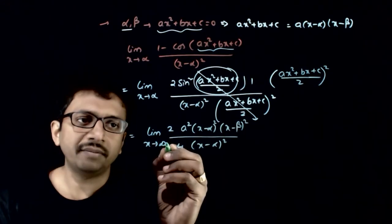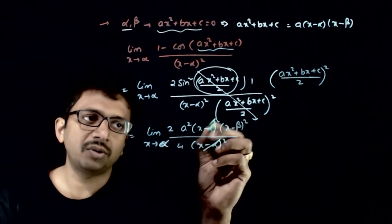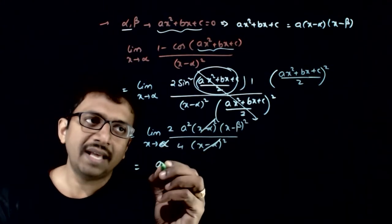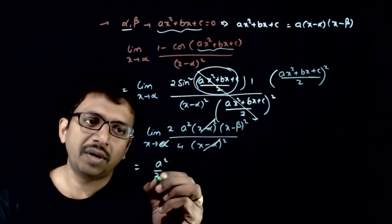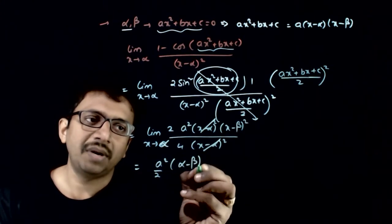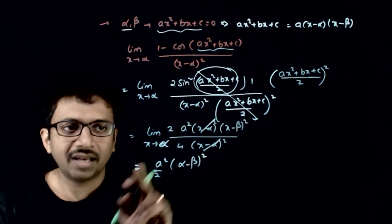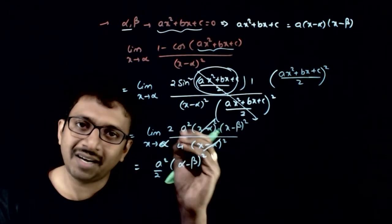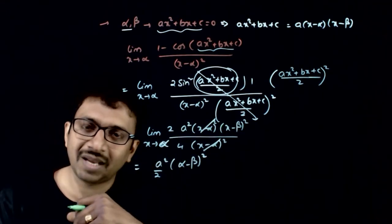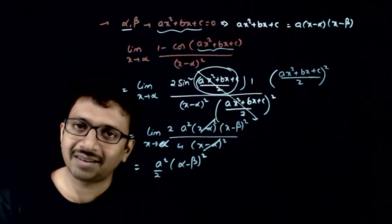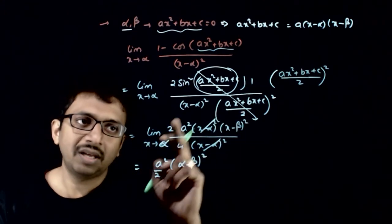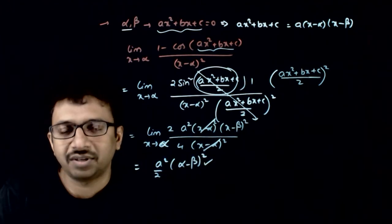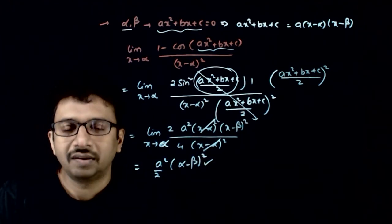As x tends to alpha, the (x − alpha)² terms get cancelled. The indeterminacy is resolved, so you just do direct substitution, giving a² times (alpha − beta)² divided by 2. That is the answer to this question. Thank you.